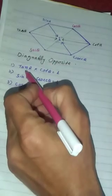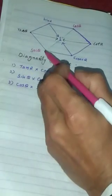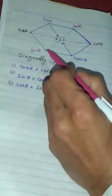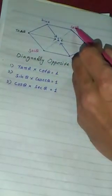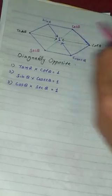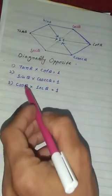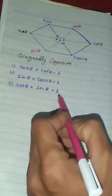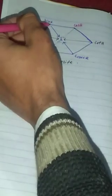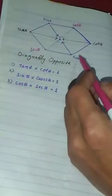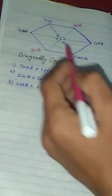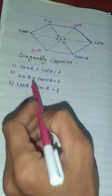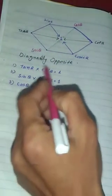Now, we have secant theta multiplied by cosine theta. Sine theta multiplied by cosecant theta is equal to 1.